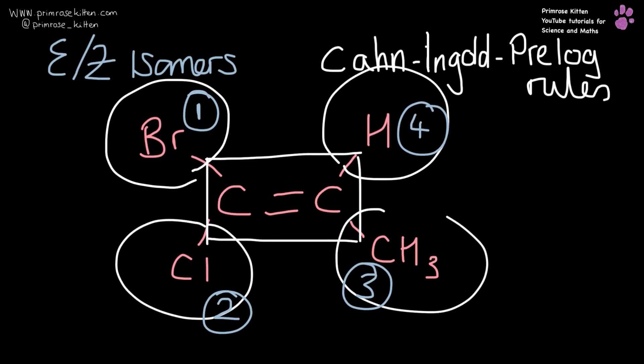Now, our two highest priority groups are one and two, and they are on different sides of the double bond. So this is an E isomer.